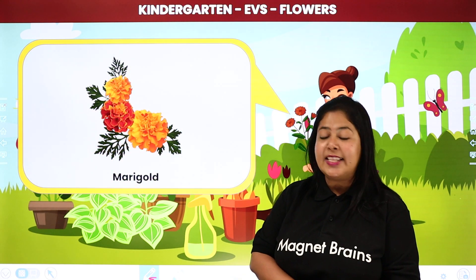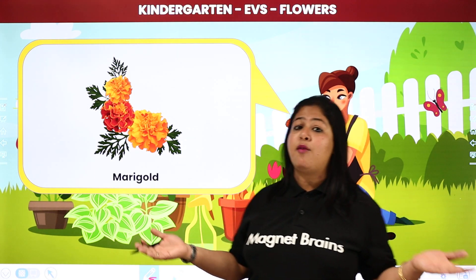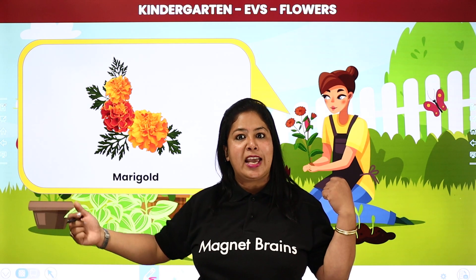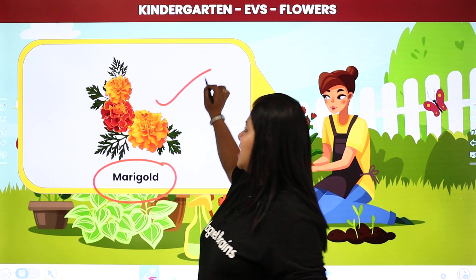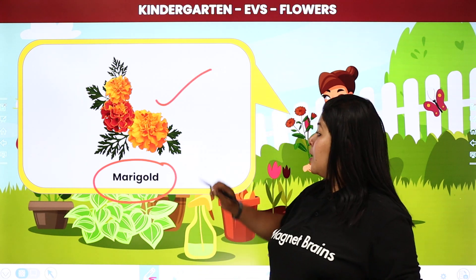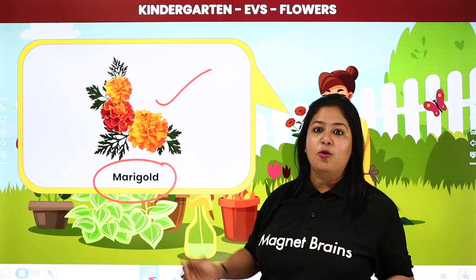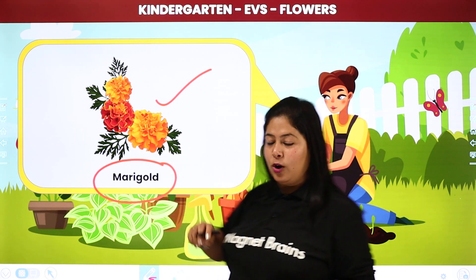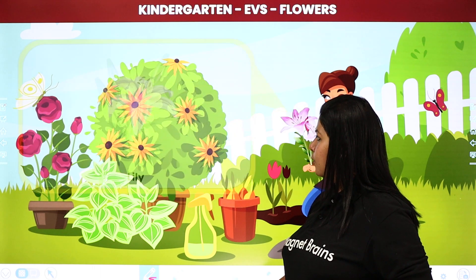Now see — this is a very common flower. Humare ghar mein koi bhi festival hota hai, weddings hoti hain, shadiyan hoti hain — toh kiski lambi lambi mala banaate hain? Marigold ke flower ki. So this is marigold — gende ka ful. Remember: this is gende ka ful, marigold.